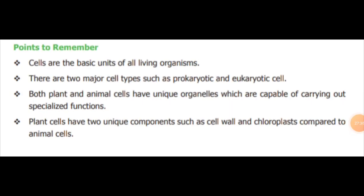In summary, cells are the basic units of all living organisms. There are two major cell types: prokaryotic and eukaryotic. Both plant and animal cells have unique organelles capable of carrying out specialized functions. Plant cells have two unique components compared to animal cells: a cell wall and chloroplasts containing chlorophyll pigment.